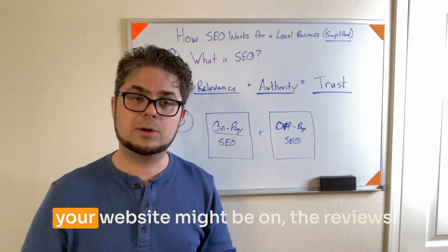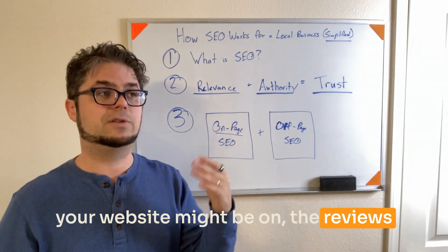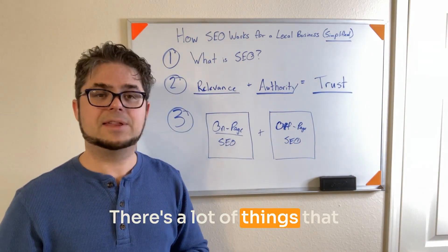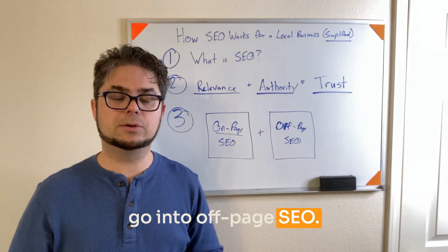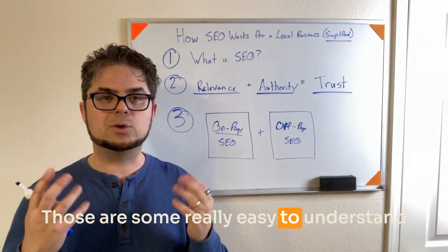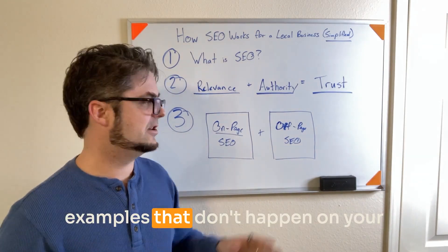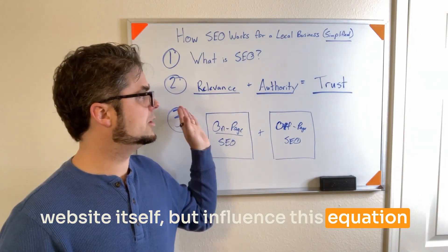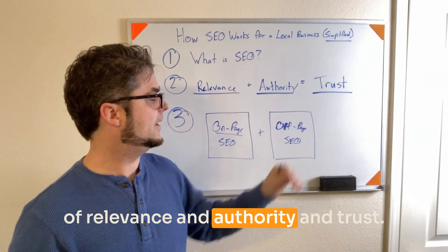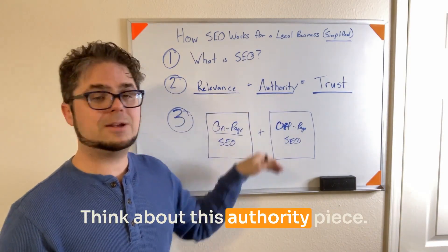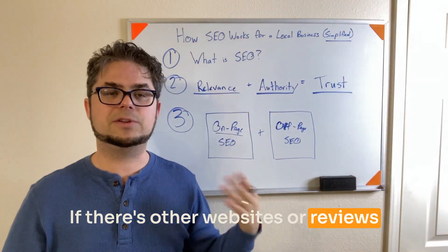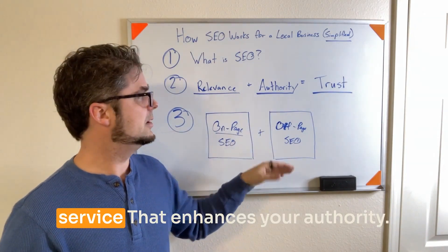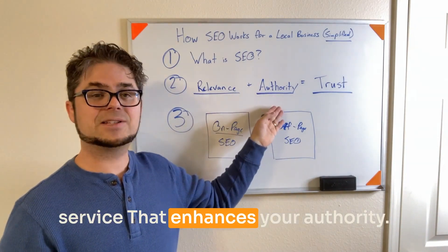The business directories your website might be on, the reviews that you might have on other websites — there are a lot of things that go into off-page SEO. Those are some really easy-to-understand examples that don't happen on your website itself, but influence this equation of relevance, authority, and trust. If there are other websites, reviews, or things talking about your website, your business, your service, that enhances your authority.